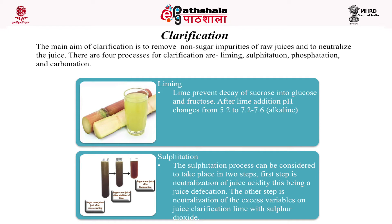The next step is clarification. The juice received from the mill is a turbid liquid with various colors from light gray to green, containing many soluble and insoluble impurities. The main aim of clarification is to remove non-sugar impurities from raw juice and to neutralize it. There are four clarification processes: liming, sulfitation, phosphatation (flotation), and carbonation.